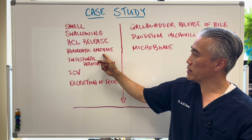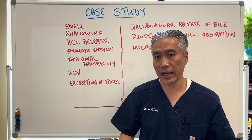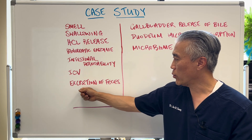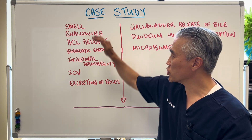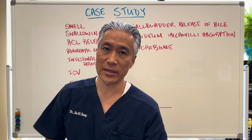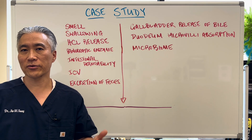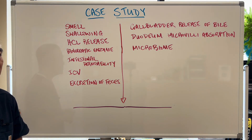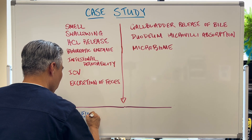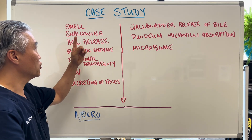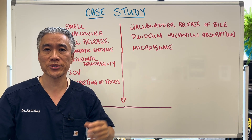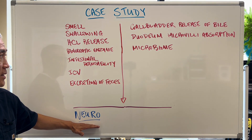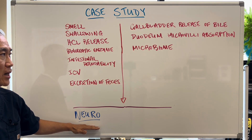This patient also has HCL release issues, low pancreatic enzymes including lipase and amylase, intestinal permeability or leaky gut, ileocecal valve issues, and constipation. When a patient presents like this, we have to ask: could it be metabolic, neurologic, immunologic, or autoimmunity? I think this patient is probably a neurological patient with issues of smell, swallowing, and digestive problems — possibly early Parkinson's, Alzheimer's, or a dementia-type presentation.